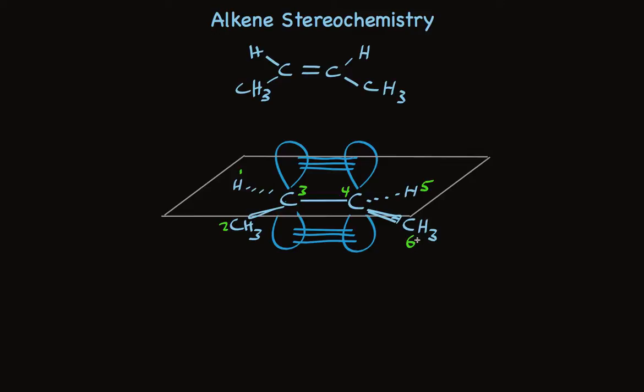This molecule is planar and is held planar. If there were rotation, it would break the pi bond, which takes far more energy than is possible. So alkenes, in contrast to alkanes, have a very fixed geometry for the carbon-carbon double bond. Notice the methyl groups are held toward us, and the two hydrogens are sticking back away from us.